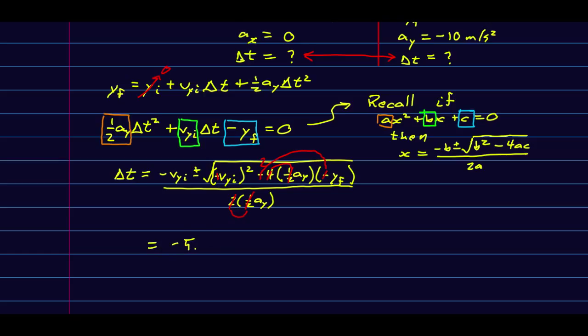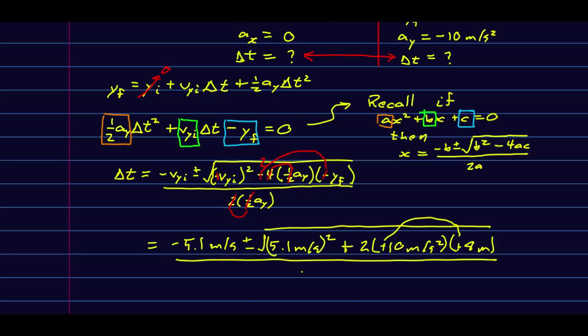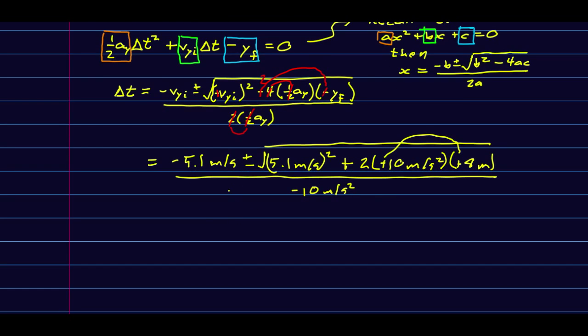I'm going to have negative 5.1 meters per second plus or minus root 5.1 meters per second all squared plus—those negatives disappeared—two times negative 10, carefully the negatives that are inside the quantities, but then this y_f is negative eight. Those negatives take each other out, so that's nice. All our negatives are gone. All divided by negative 10 meters per second squared. At this point, you've got to plug that into a calculator.